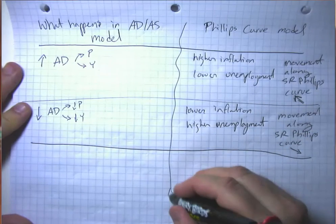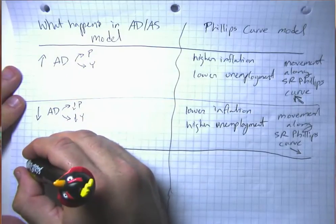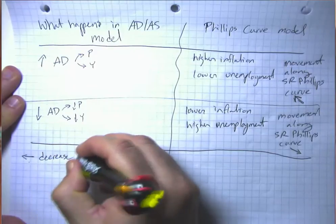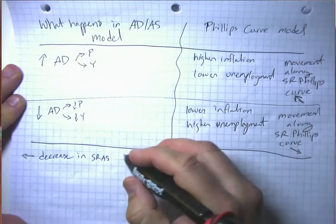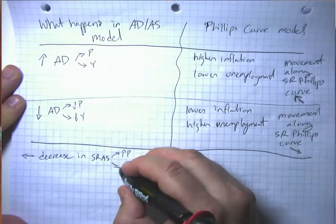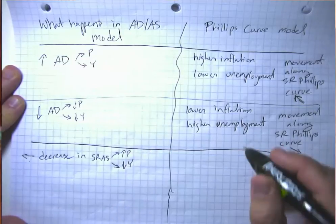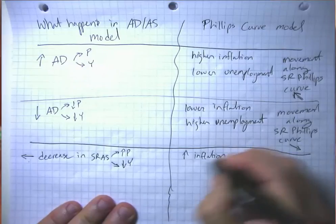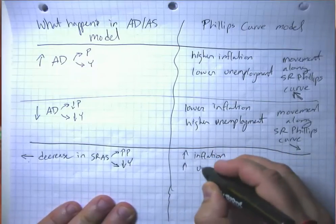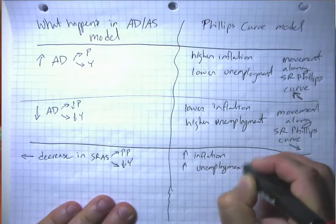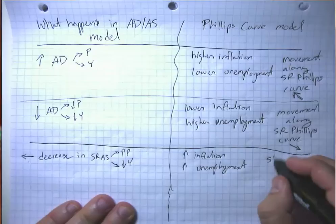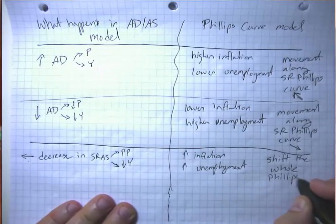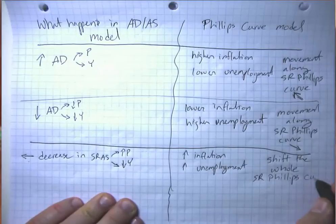What about changes in short-run aggregate supply? A leftward shift or decrease in short-run aggregate supply is going to tend to cause both higher prices and lower GDP. So that's just pretty much a bad thing. So that means we are having higher inflation and higher unemployment. And we can't do that by shifting along a fixed short-run Phillips curve. So we shift the whole short-run Phillips curve. We shift it to the right.